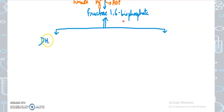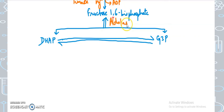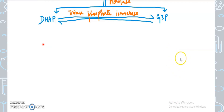In the fourth step, fructose-1,6-bisphosphate, a 6-carbon compound, is broken down into two 3-carbon compounds: dihydroxyacetone phosphate and glyceraldehyde-3-phosphate. The enzyme is aldolase. These two 3-carbon sugars are isomers — the only difference is the functional group: a ketone in dihydroxyacetone phosphate and an aldehyde in glyceraldehyde-3-phosphate. They can be interconverted by the enzyme triose phosphate isomerase, which converts dihydroxyacetone phosphate into glyceraldehyde-3-phosphate. The rest of the reaction continues with glyceraldehyde-3-phosphate alone.